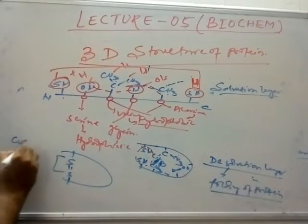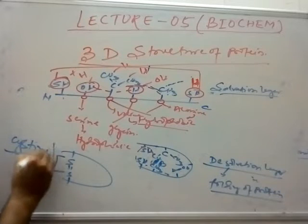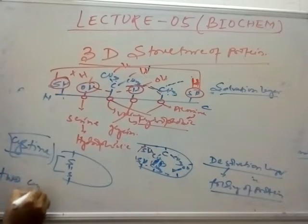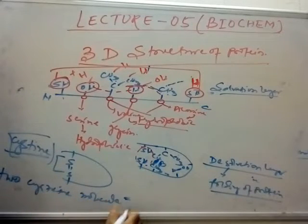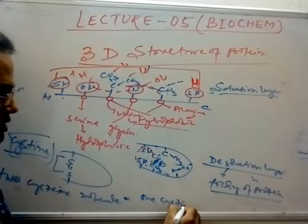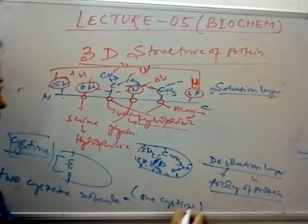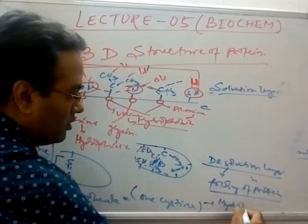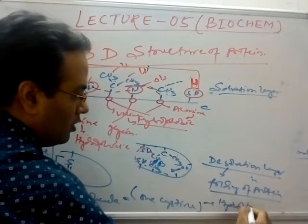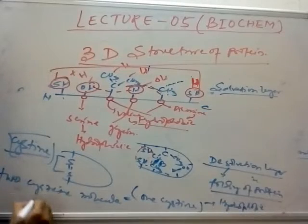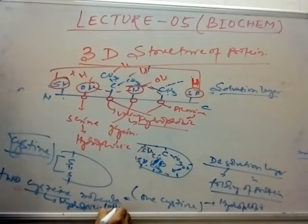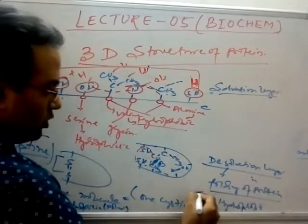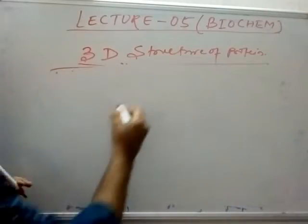Two cysteine molecules can form one cystine molecule. Cystine becomes hydrophobic — you have to remember that cystine is hydrophobic. Remember that cysteine individually is hydrophilic or polar, but cystine formed by disulfide bond is non-polar. The functional, folded protein is of two types.